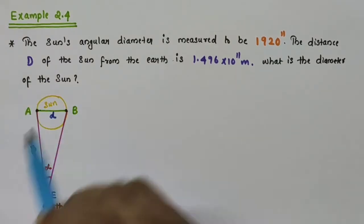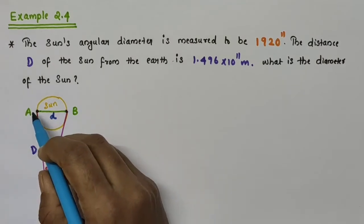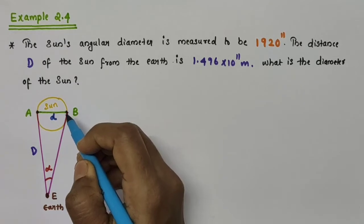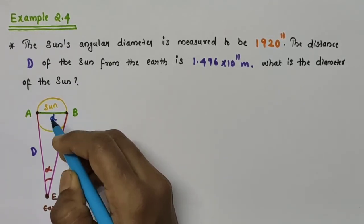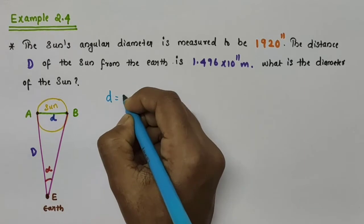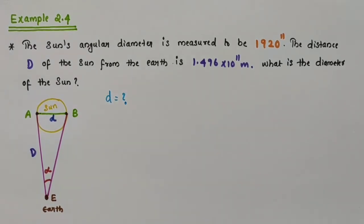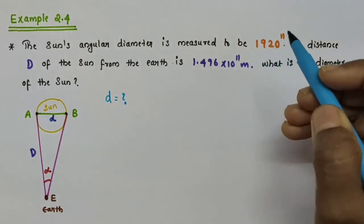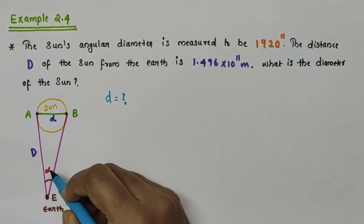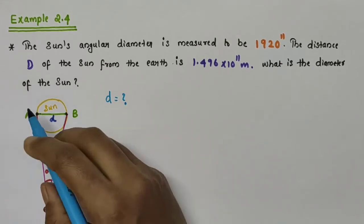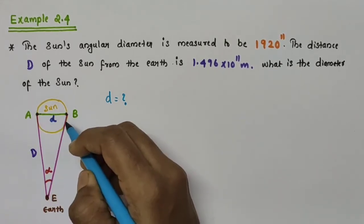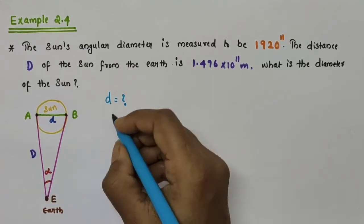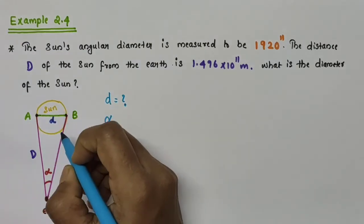So, imagine this as the sun. We have considered two diametrically opposite points A and B, so that the distance AB is the diameter of the sun — small letter d — this is the diameter of the sun which is to be determined here.